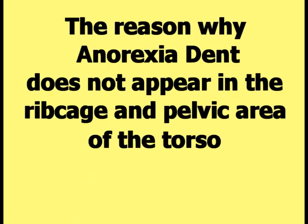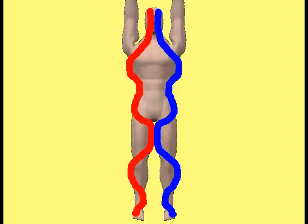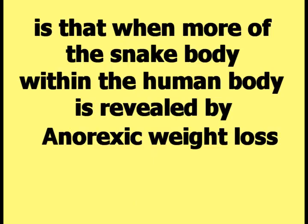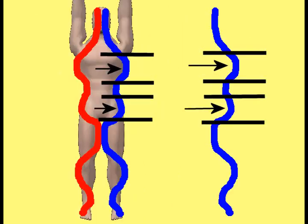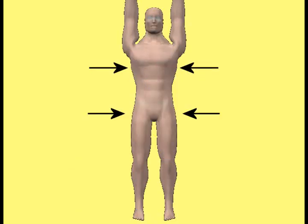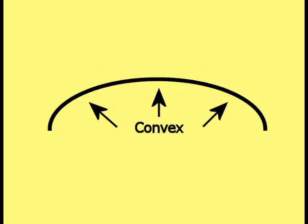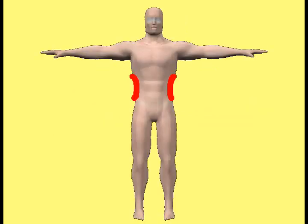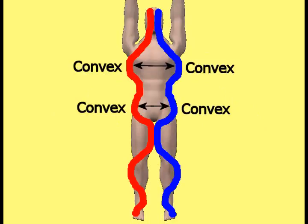The reason anorexia dent does not appear in the ribcage and pelvic areas, using the two snakes' view explanation, is that when anorexic weight loss reveals more of the snake body in those areas, more of the rounded outwards convex wave shape is revealed. No matter how much weight is lost in the ribcage and pelvic area, the convex wave shape of the snake body will prevent any depression or indentation like the hallmark of anorexia dent from forming there.